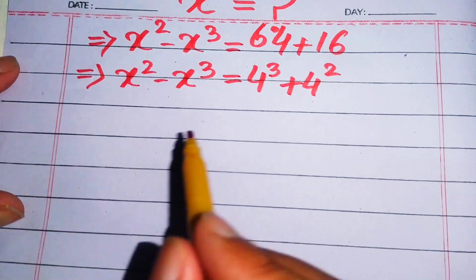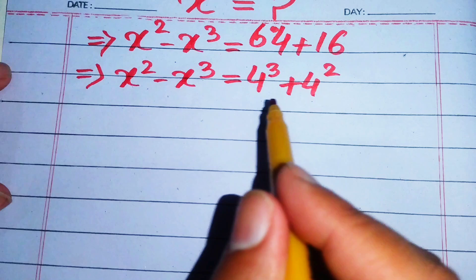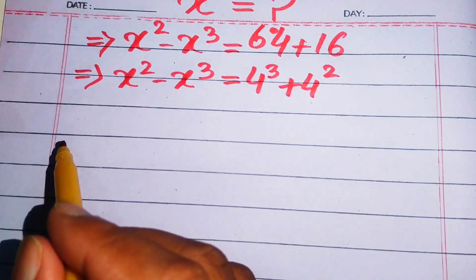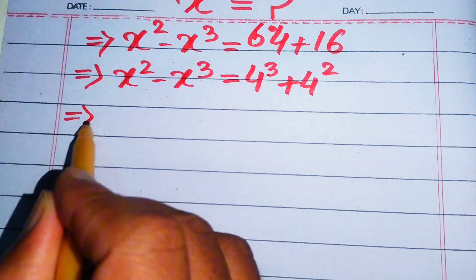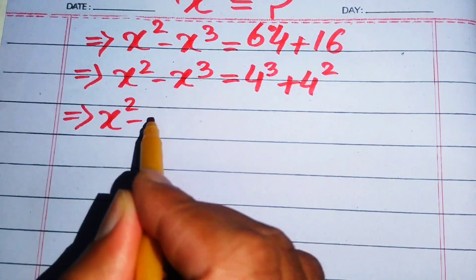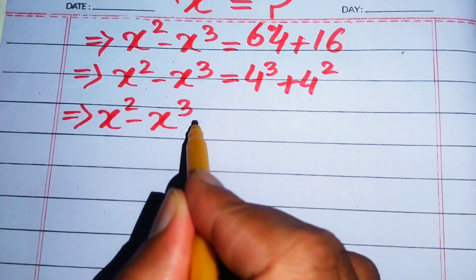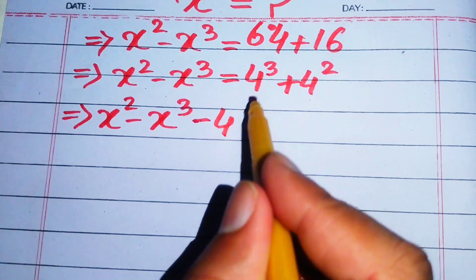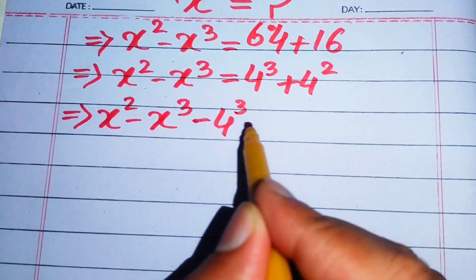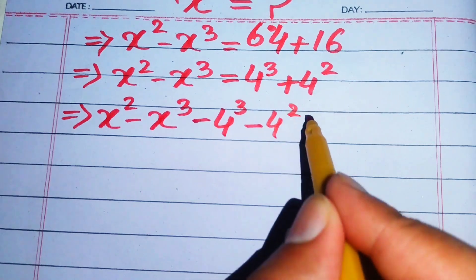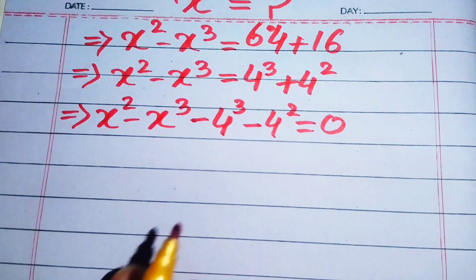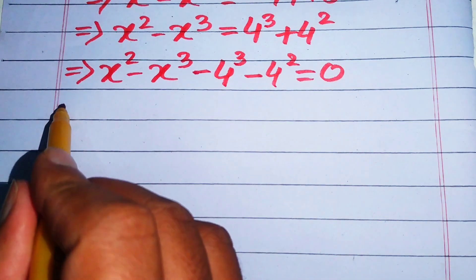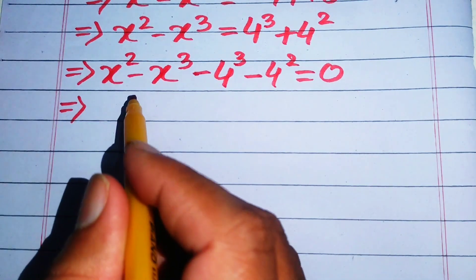After this step, we move all the terms from the right hand side to the left hand side. It is written as x squared minus x cubed, and we move these terms to the left hand side, so plus 4 cubed becomes minus 4 cubed, and plus 4 squared becomes minus 4 squared. This whole equation equals zero.